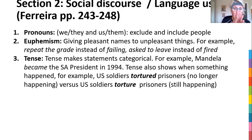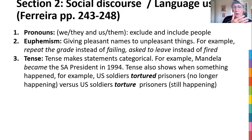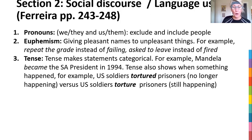Tense use is also part of social discourse. If you use tense statements, they're often quite categorical — it's like true or false, straightforward and direct. For example, 'Mandela became the president in 1994' is a categorical statement. So if you're using tense in that form, it's making direct statements. It also shows that something has happened and when it is happening — if I say 'US soldiers tortured prisoners,' it means they did it in the past; but 'US soldiers torture prisoners' in the present tense means it's still happening. So look at tense use.